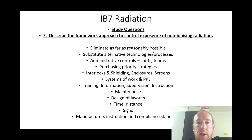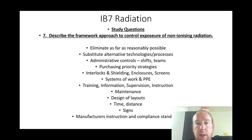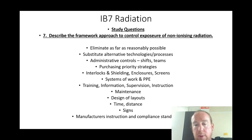Describe the framework approach to controlling exposure to non-ionizing radiation: eliminate as far as reasonably possible; substitute alternative technologies and processes; administrative controls such as shift and team rotation to limit exposure duration; purchasing prioritization strategies; interlocks, shielding, enclosures, and screens; systems of work and PPE; training, information, supervision, instruction, maintenance, design and layouts, time and distance controls, signage, manufacturer's instructions, compliance with standards, automation, and mechanization.